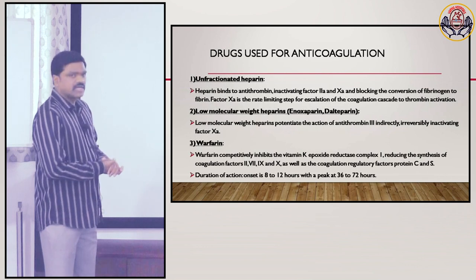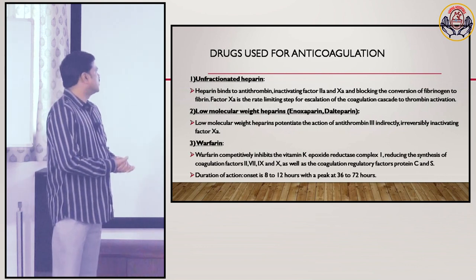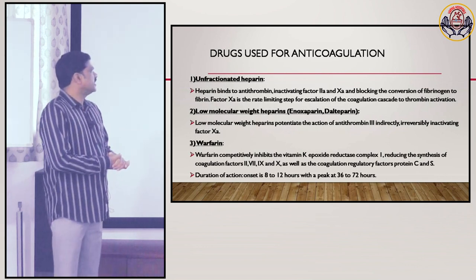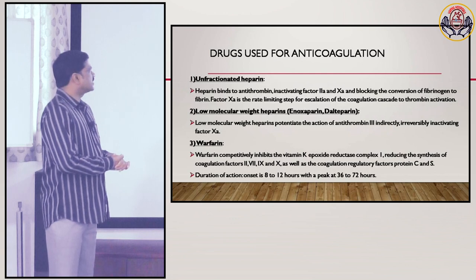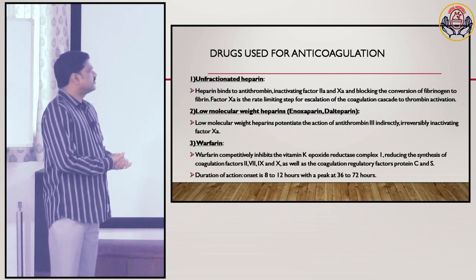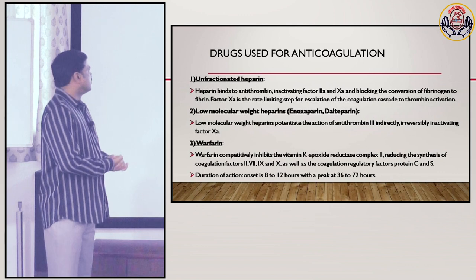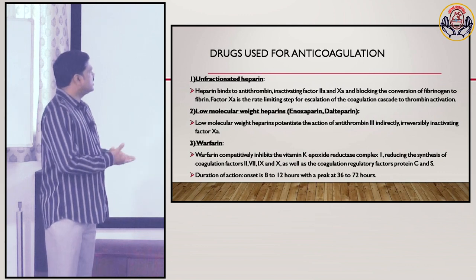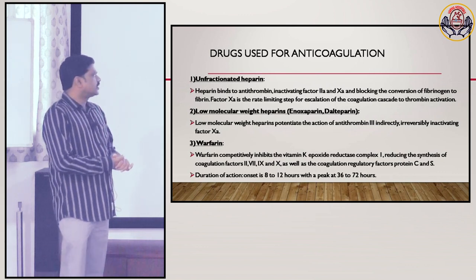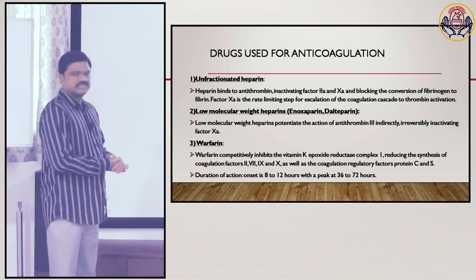Drugs used for anticoagulation. Unfractionated heparin: heparin binds to antithrombin, inactivating factor 2a and 10a, blocking the conversion of fibrinogen to fibrin. Factor 10a is the rate-limiting step for acceleration of the coagulation cascade to thrombin activation.